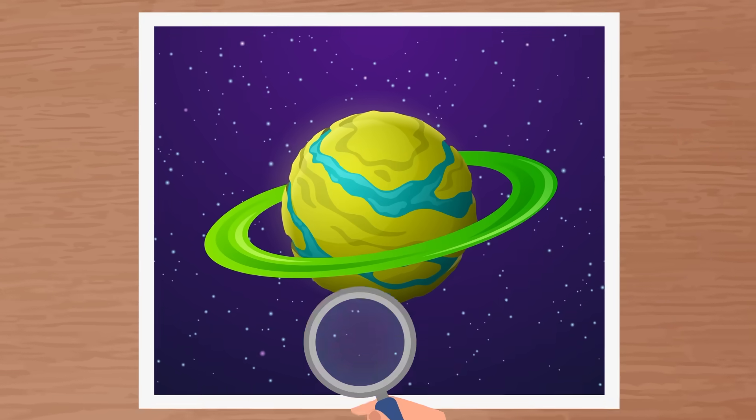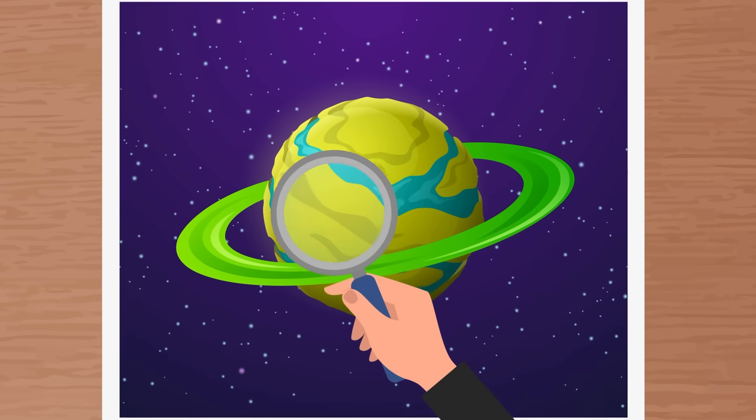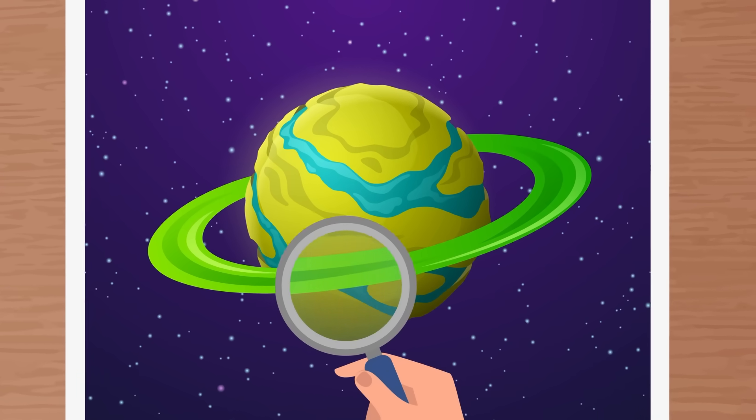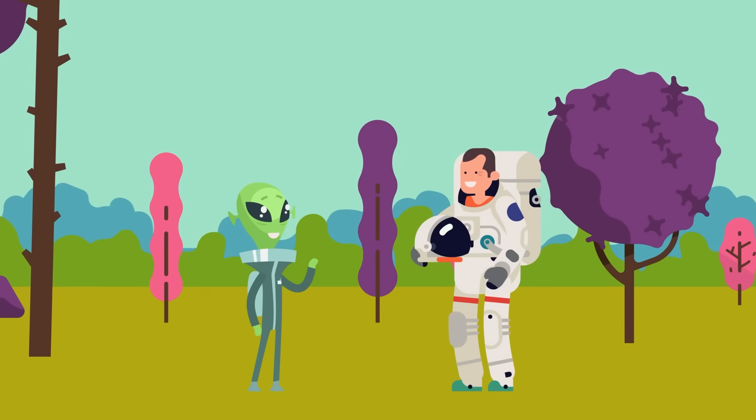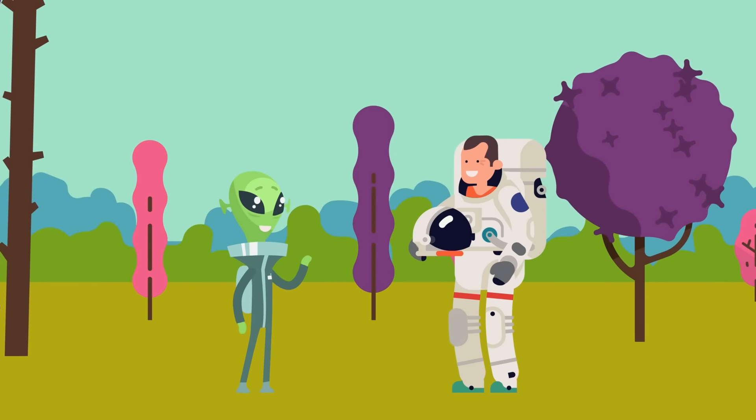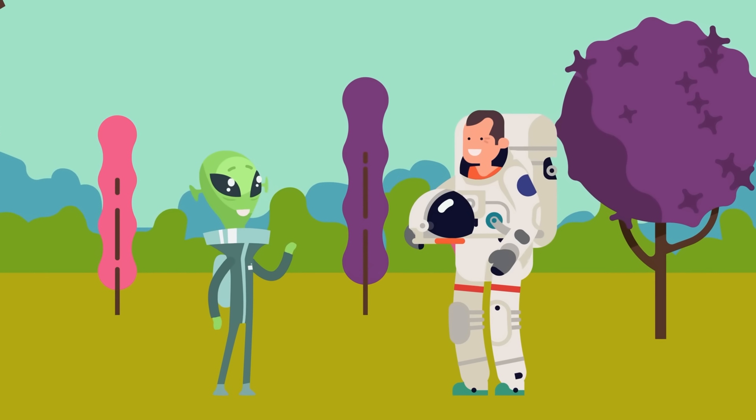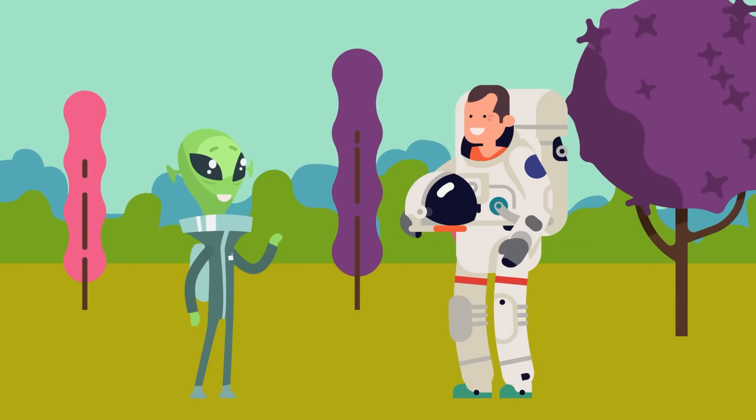But most intriguing of all, a super-habitable planet and an Earth-like planet might not necessarily be the same thing. In only searching for Earth-like exoplanets, we might be missing something even better. That's right, these scientists were on a quest to find not just a place like Earth, but somewhere that's potentially completely different from our own home planet, while also being an even better home for us than Earth ever was. Yeah, now things are getting crazy.